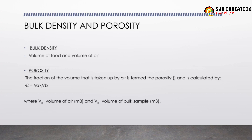Bulk density deals with both the volume of food and the volume of air. Porosity is the fraction of volume taken up by air only. The formula uses V_A for the volume of air and V_B for the volume of the bulk sample.